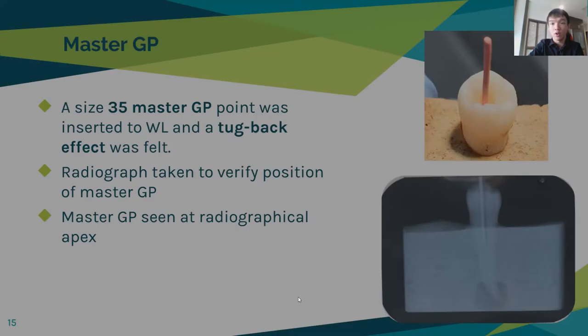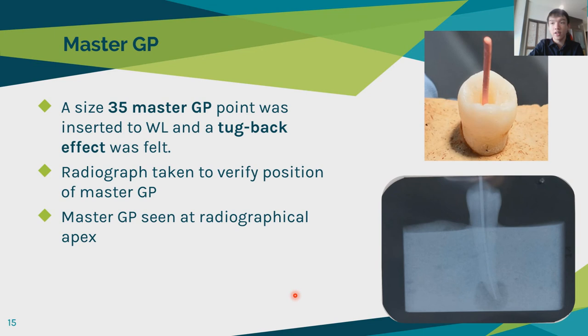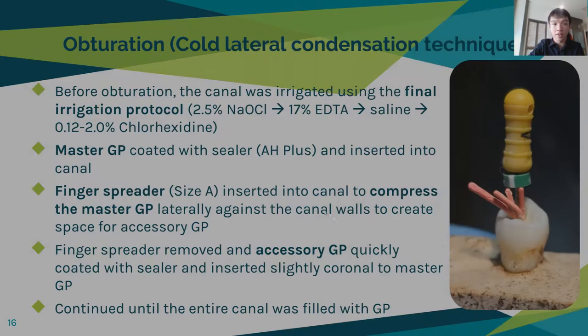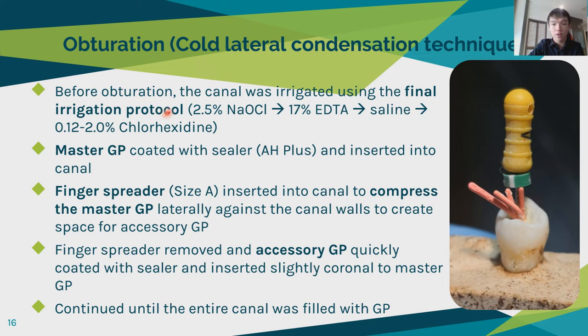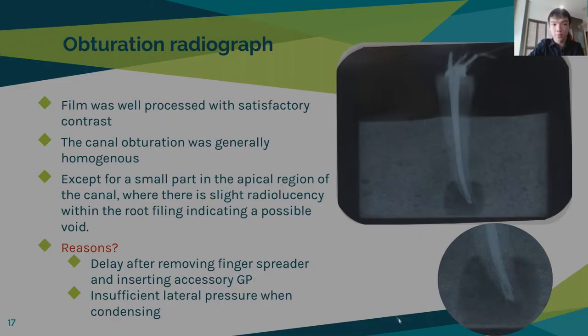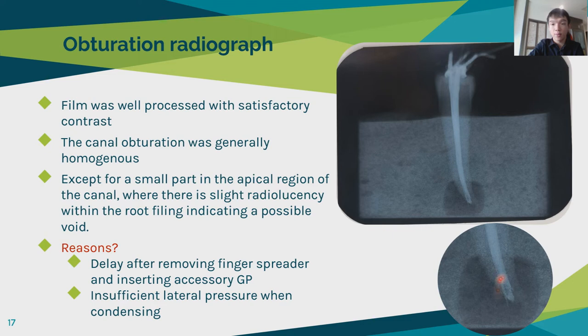For the master GP, a size 35 master GP was inserted with tug-back and was at the radiographic apex. For obturation, I did a final irrigation protocol, inserted the master GP coated with sealer, and compressed it using a finger spreader. More accessory GP was inserted until the entire canal was filled. The obturation radiograph was generally acceptable, except for one void at the apical one-third, possibly due to inadequate lateral pressure or delay between removing the finger spreader and inserting the accessory GP.